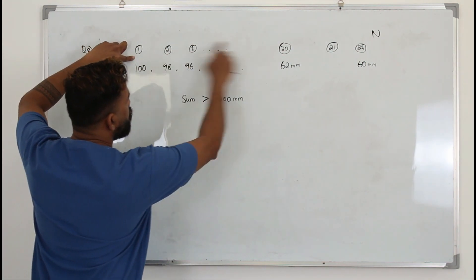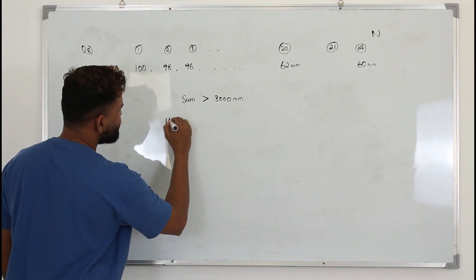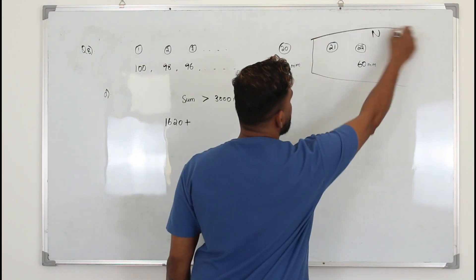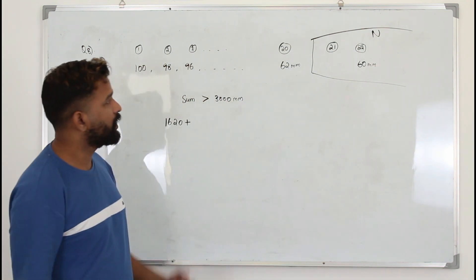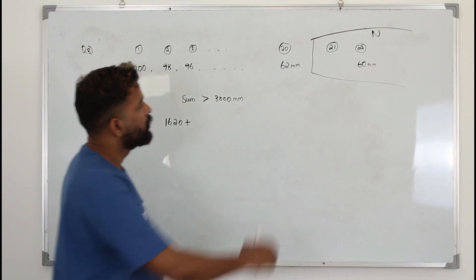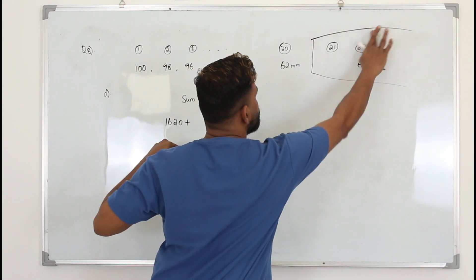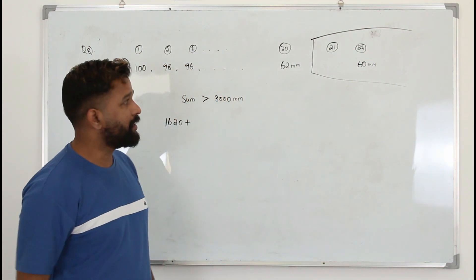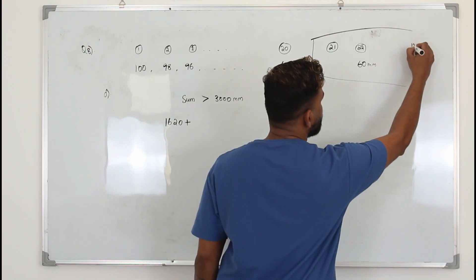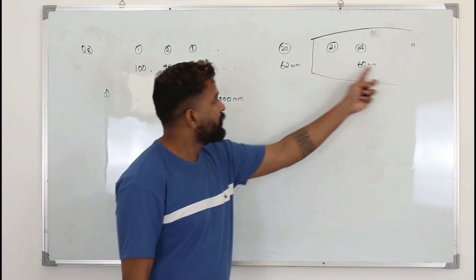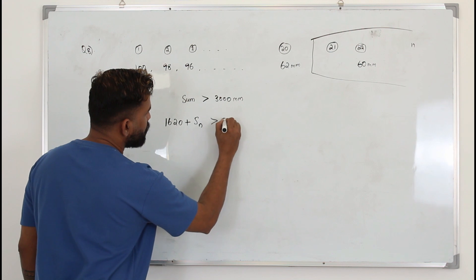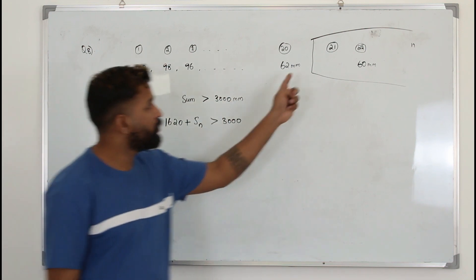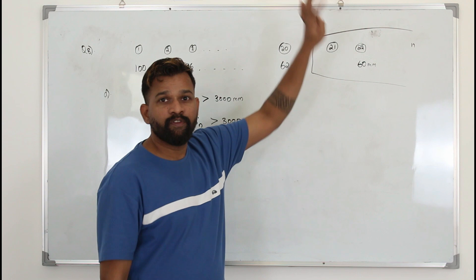We got the sum of 1 to 20 terms in part B which is 1620. From the 21st term that's a geometric series. Let's say the total term is capital N, that means 20 plus whatever number of terms you have here. Here the number of terms is small n. So you need to find the sum where 1620 plus sum of geometric terms is greater than 3000.